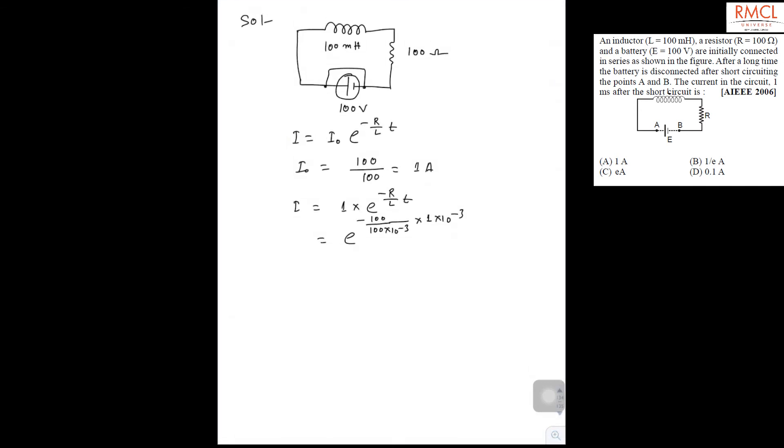So now this will be cancelled out and this 100 will be cancelled out. So it becomes e^(-1). So I will be equal to 1/e. So the correct option will be B.